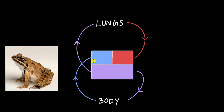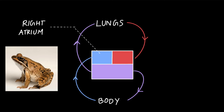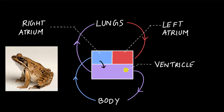In double circulation, the deoxygenated blood enters the right atrium — it's called right because from the organism's own perspective, this is their right side. From there, blood goes into the ventricle, then to the lungs where it gets oxygenated. For amphibians, some oxygen also comes from the skin. The oxygenated blood is then passed to the left atrium, then back to the ventricle, and from the ventricle it goes to the body. Blood passes through the heart again to gain speed so it can reach every cell of the body.